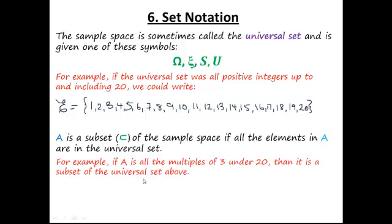For example, we could say A is all of the multiples of 3 under 20. Let's write out what A is. We always write in curly brackets like this. So A is all the multiples of 3 under 20: 3, 6, 9, 12, 15, and 18. Now because all of the elements in A are also in the universal set, that means A is a subset of the universal set.